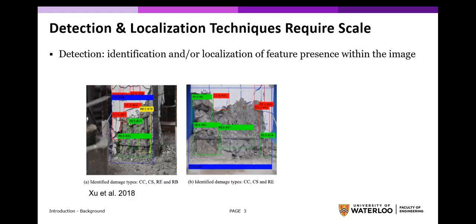Recent works have been proposed in the area of vision-based visual inspection techniques, which utilize vision-based sensors to perform visual inspection in order to speed up the pace and consistency of inspection. These techniques can be categorized mainly into three different categories: detection, localization, and quantification. Detection involves identifying and localizing important features such as defects within the image. An example work by Sue shows identification and classification of different types of building concrete damage in an image, such as concrete cracking and rebar exposure.